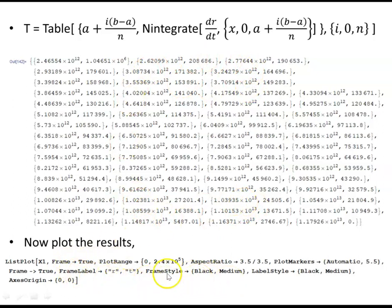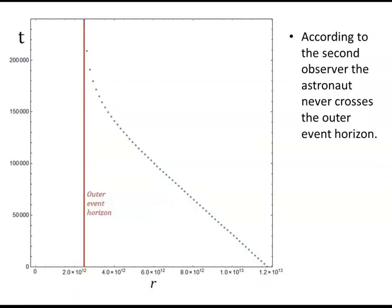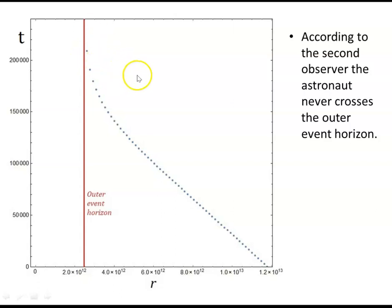Setting up the table and integrating (without a minus sign, since we integrate from the event horizon outward) produces 60 ordered pairs. Plotting these, we see coordinate time t measured by the laboratory observer. It takes far more than 50,000 seconds — in fact, the curve asymptotically approaches the outer event horizon but never connects with it. According to the second observer, the astronaut never crosses the outer event horizon, because it takes an infinite amount of coordinate time to reach it.